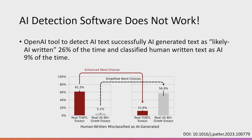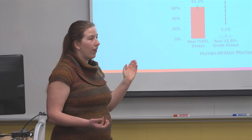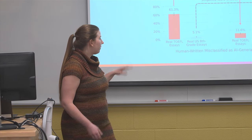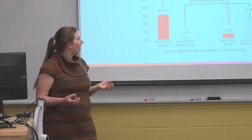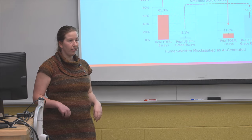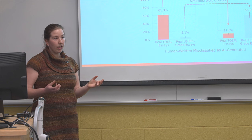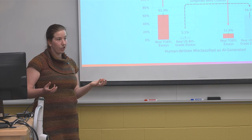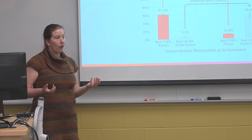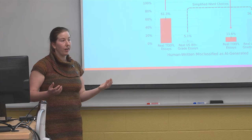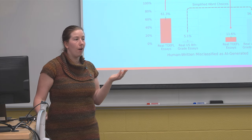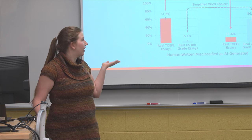These tools are not something we can reliably use. Furthermore, you can give prompts to AI to manipulate detection. If you take real TOEFL essays and tell ChatGPT to enhance the word choices, now only 11% are determined as AI-written — significantly reducing detections. Conversely, if you take 8th grade essays and tell the AI to simplify word choices, 56% are then identified as AI-generated. These prompts are all over the internet, so students would quickly learn how to evade detection.